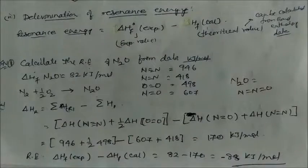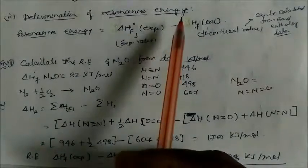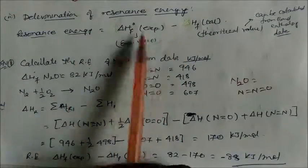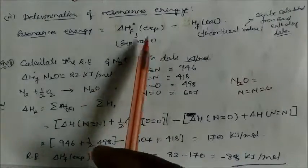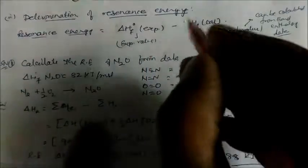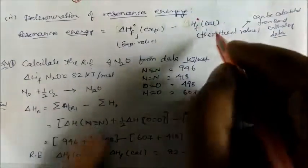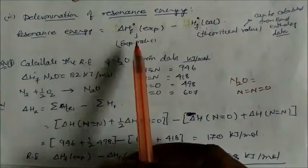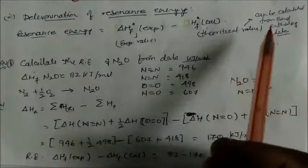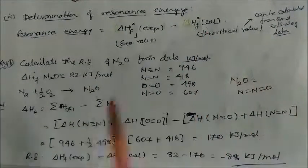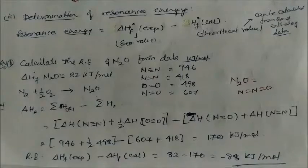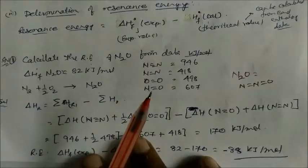Resonance energy is defined as: experimental heat of formation (from experiment) minus theoretical heat of formation (calculated from bond enthalpy data). The experimental value is taken from measurements; the theoretical value is calculated using bond enthalpy data.